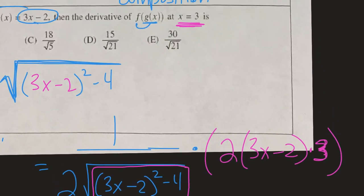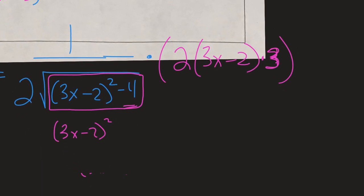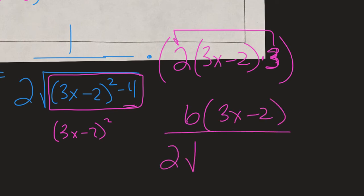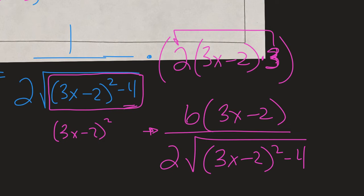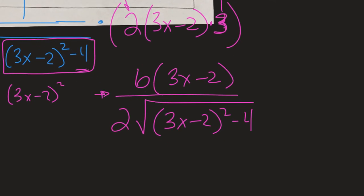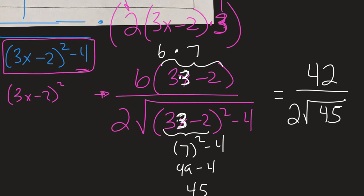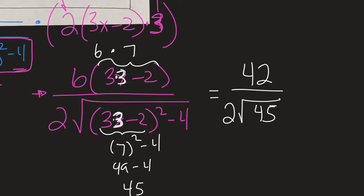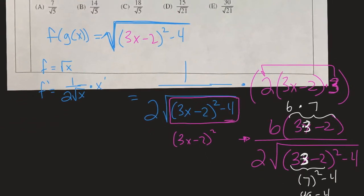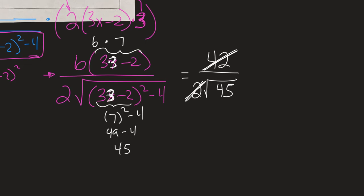Before plugging in x equals 3, I simplify a bit: 2 times 3 is 6 in the numerator, giving 6 times (3x minus 2) all over 2 times the square root of all that stuff. Plugging in x equals 3 leads to 42 over 2 root 45, which simplifies to 21 over root 45.